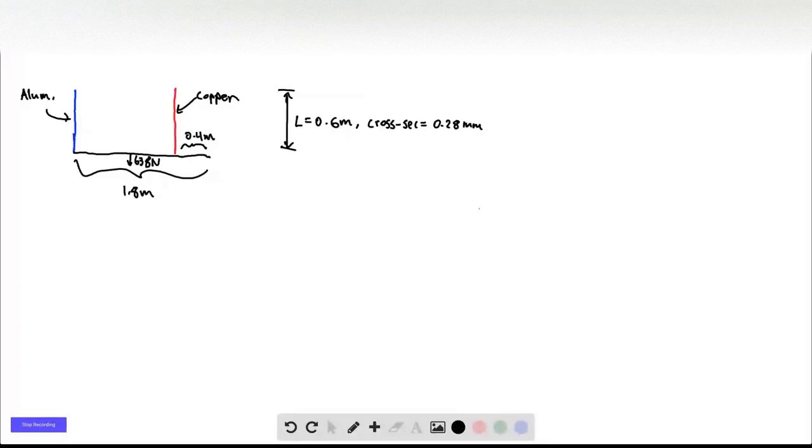So we have a metal bar that weighs 638 Newtons and is 1.8 meters long. And it's suspended by two wires. One is aluminum and one is copper. They both have a length of 0.6 meters and a cross-section of 0.28 millimeters, circular cross-section.